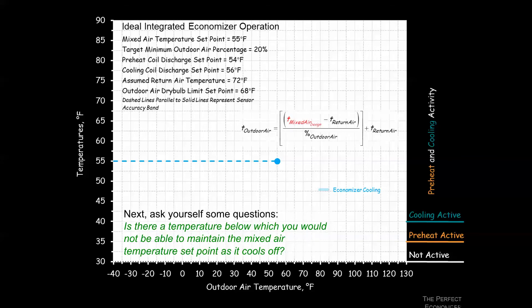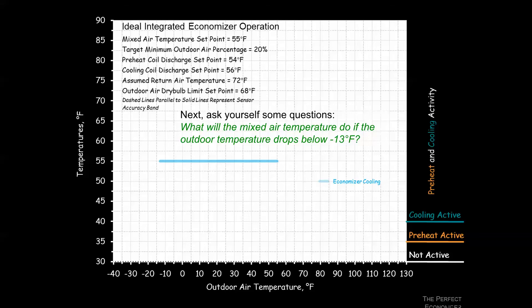Rearranging our equation with 20% outside air, the given return air, and our mixed air set point, we find that at negative 13 degrees we can no longer hit that 55-degree set point. This is a powerful concept — it has to get below negative 13 degrees outside for this system to be unable to meet its mixed air temperature. Below that, at negative 40 degrees, we'd see approximately 50 degrees mixed air, assuming ideal mixing.